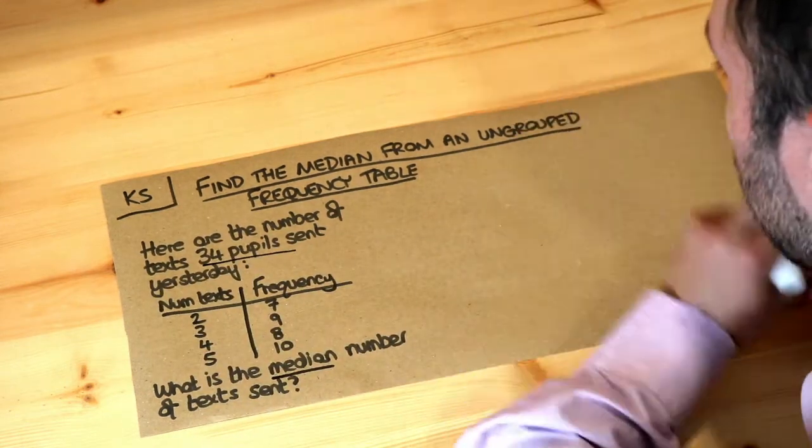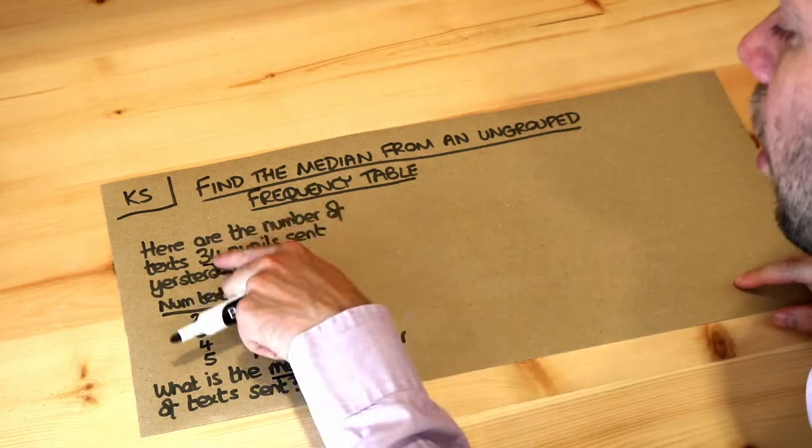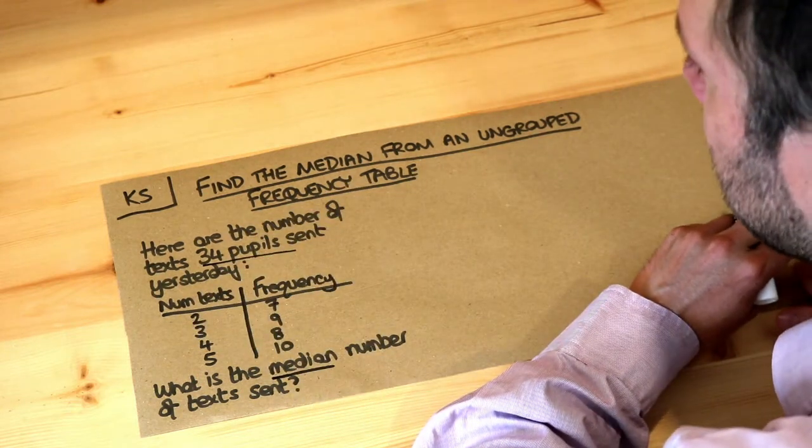So if we want the middle person, if you just half the 34, we get the 17th person.